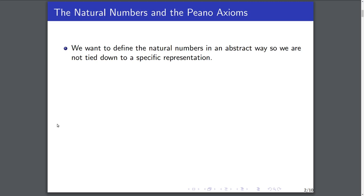We want to define the natural numbers in a kind of abstract way — not to be intentionally confusing, but so that we can avoid being tied down to a specific representation. We have the conventional base 10, but we want some sort of definition that allows us to use binary or ternary or any base, or any way that we could potentially represent the natural numbers, so we could use symbols that aren't 0 through 10.